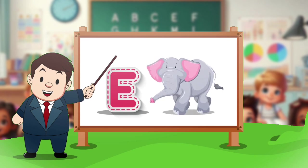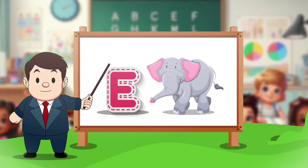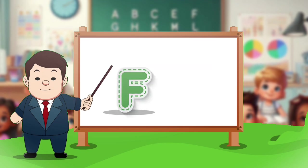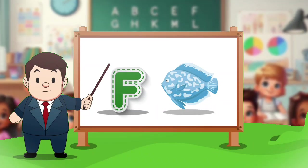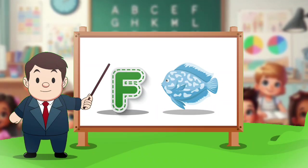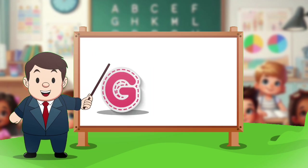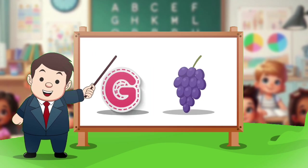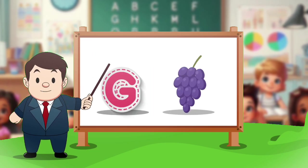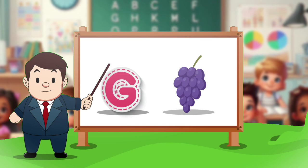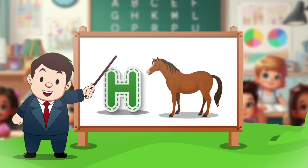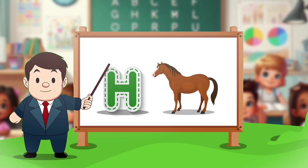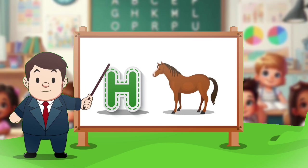E. E for elephant. F. F for face. G. G for crab. H. H for horse.